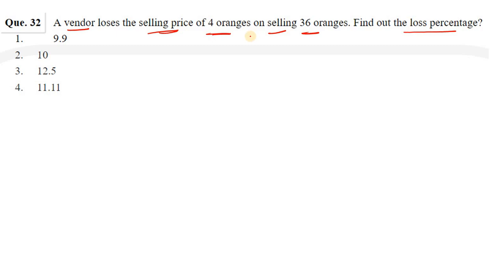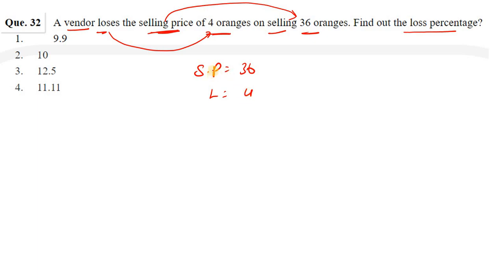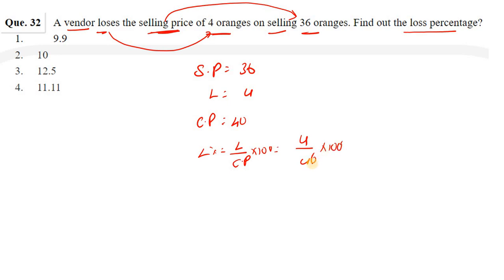The selling price of 4 oranges is given. The cost price of 4 oranges — the loss is the cost price minus selling price. Since the selling price of 4 equals the cost price of 36, the cost price of 4 oranges is lower. The last percentage works out to 80. So the loss percentage is approximately 80%.